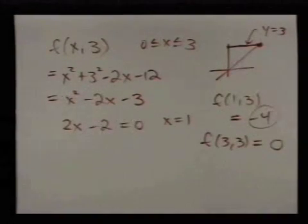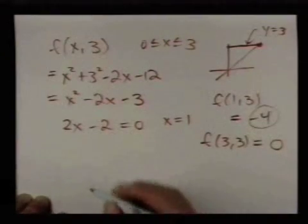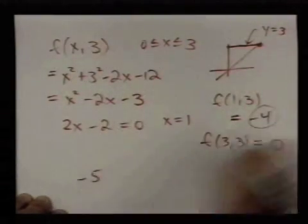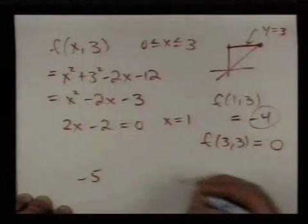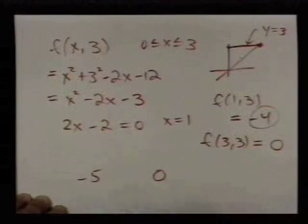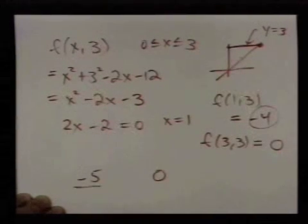Recalling the list we have so far: we found -5 on the inside, -4, and 0. So far the smallest value we find is -5 and the largest value is 0. The last piece to check is the line y=x.